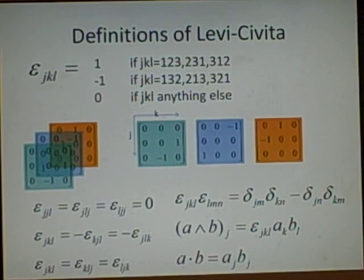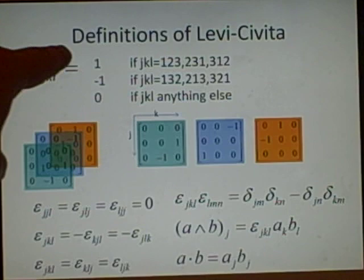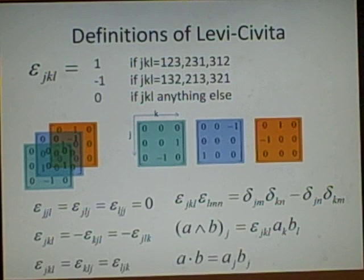This is the Levi-Civita, and it's just the same as the other one, but instead of being a 3 by 3, it's a 3 by 3 by 3, so it's a cube. And this has values 1 if jkl equals 123, 231, or 312. It's just a cycle.